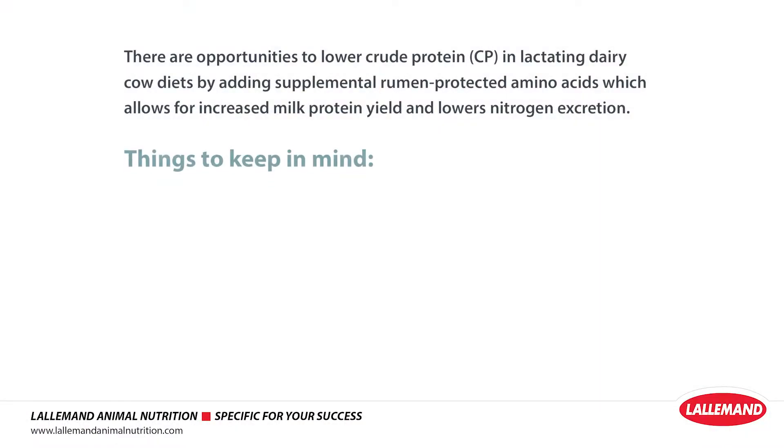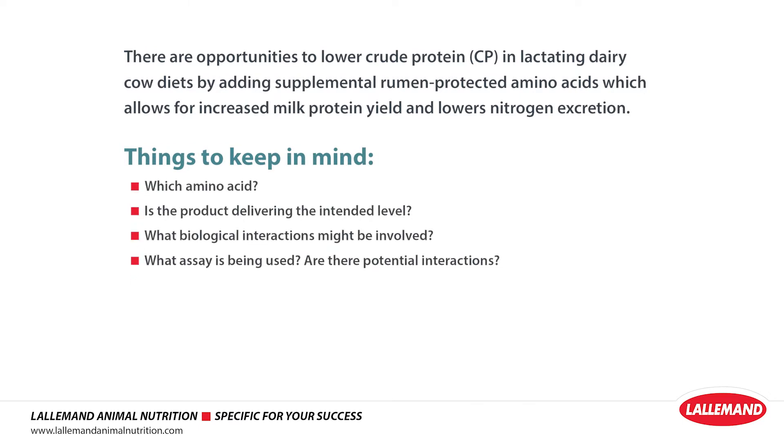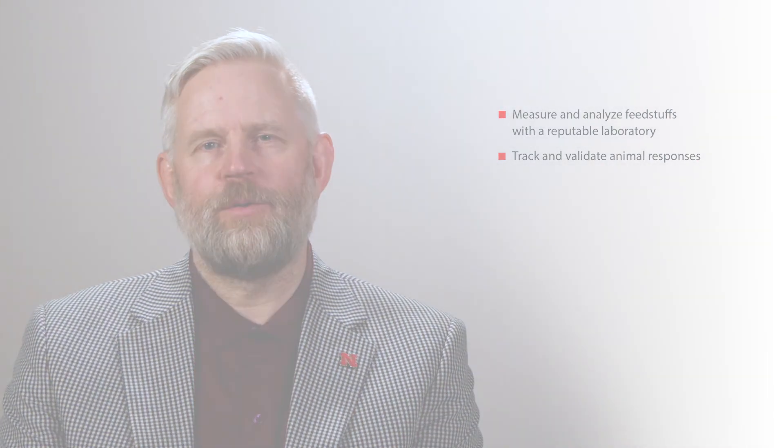So it's important when looking at these assays to not only focus on the end result but to understand that there may be interactions between the type of rumen-protected amino acid and the assay being used. It's also important to observe the responses in the animals, whether that's in a research setting or a production setting, because ultimately what we want to know is how these feeds and products work in the animal. It's important to validate animal responses as a final end game when looking at changes in ration formulation.